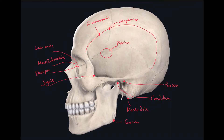The last point I want to identify on this image is called the asterion. It's located at the intersection of the parietal mastoid suture, the lambdoid suture, and the occipitomastoid suture. So this point right here where all these sutures come together — that's called the asterion.